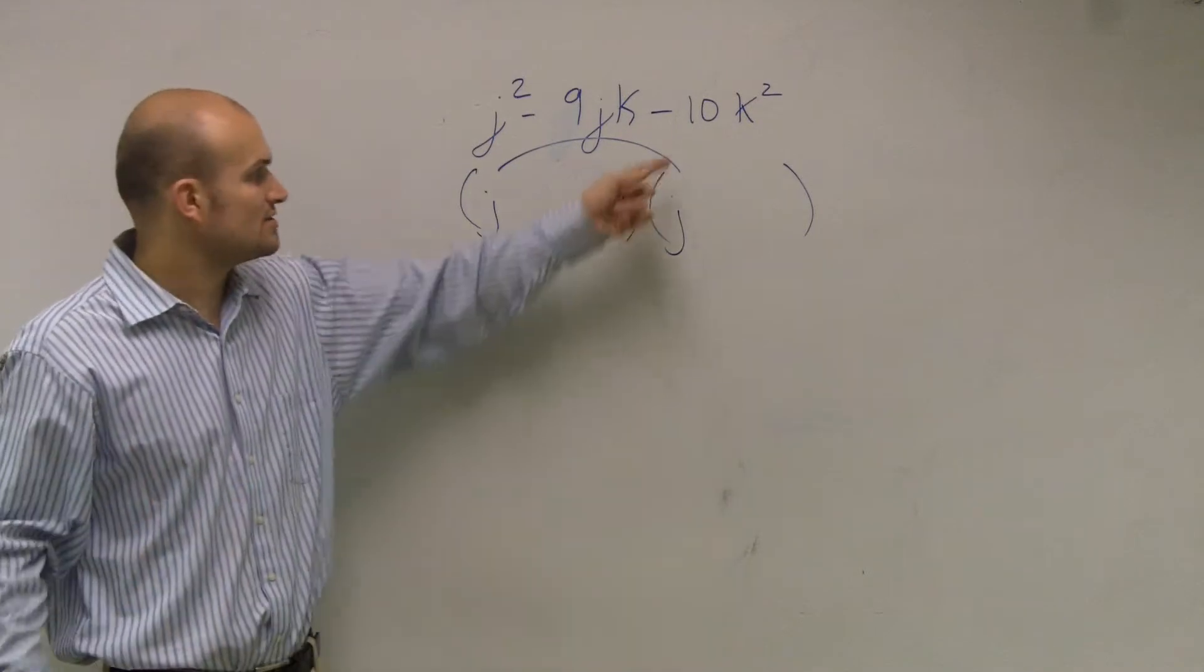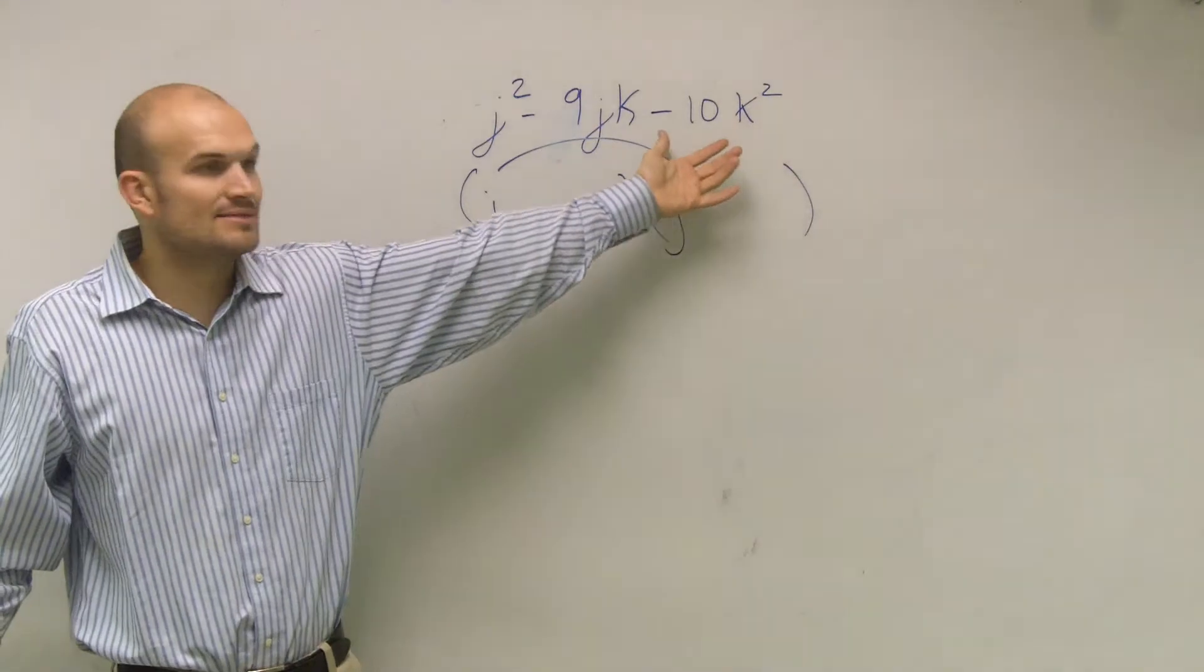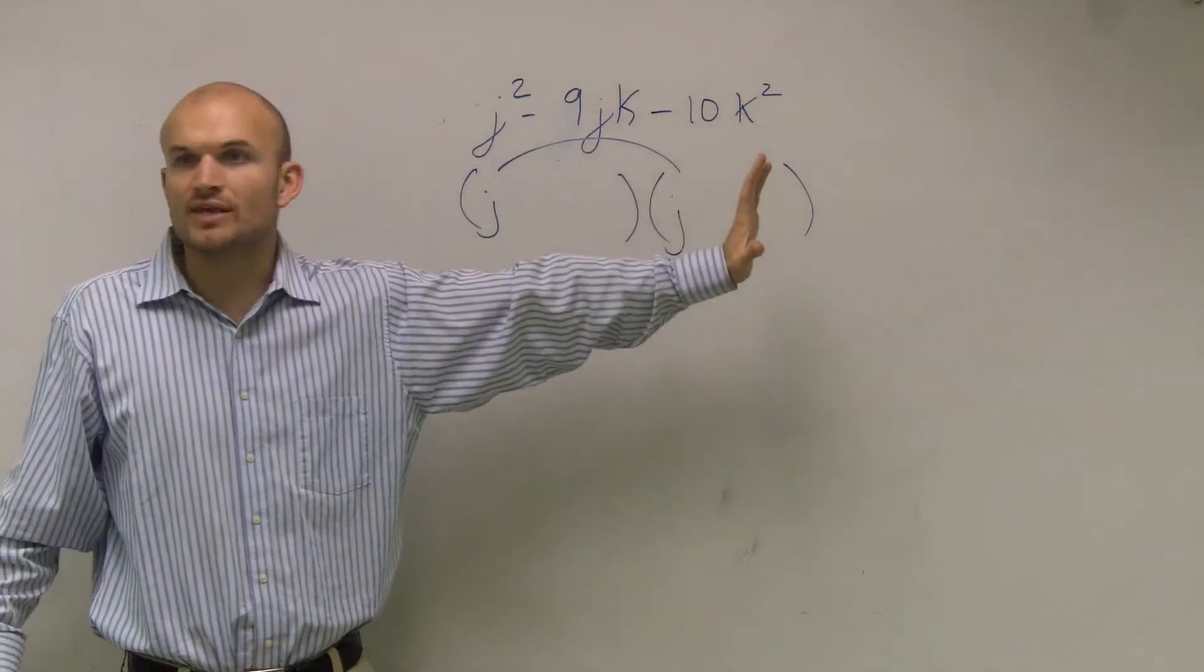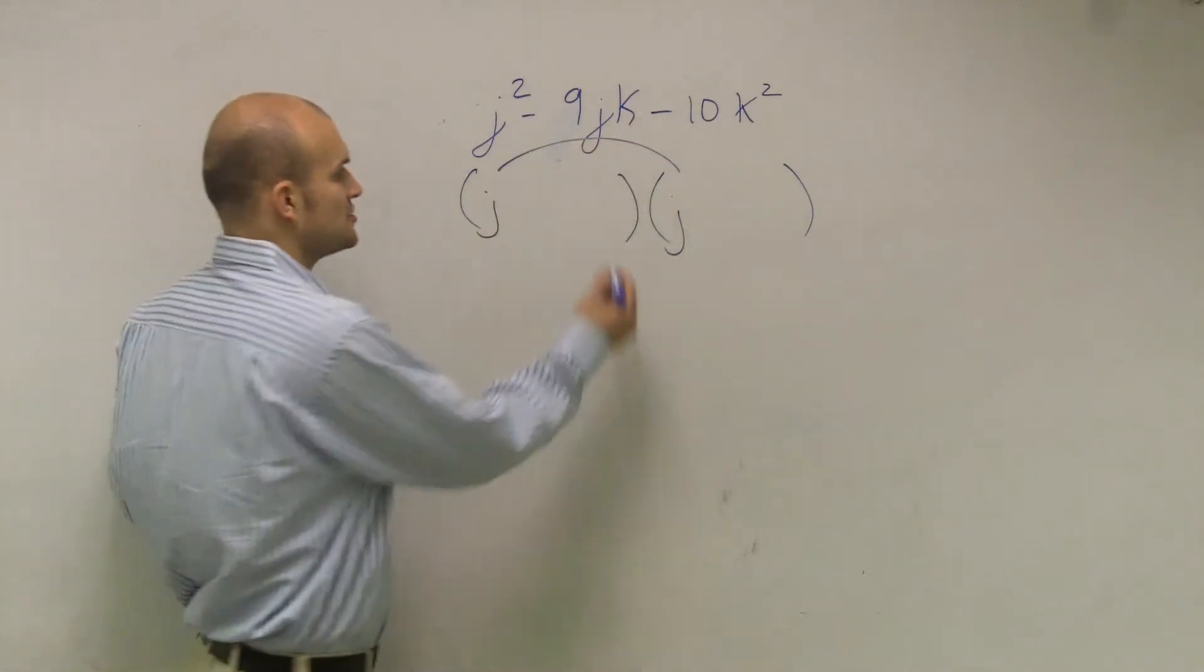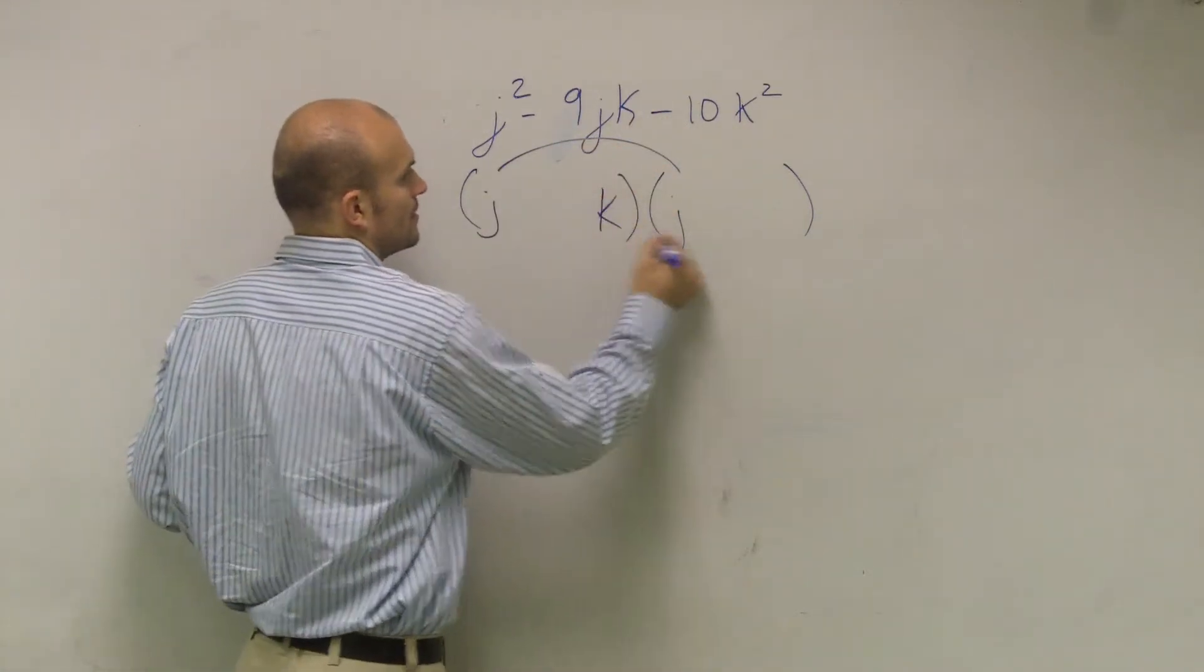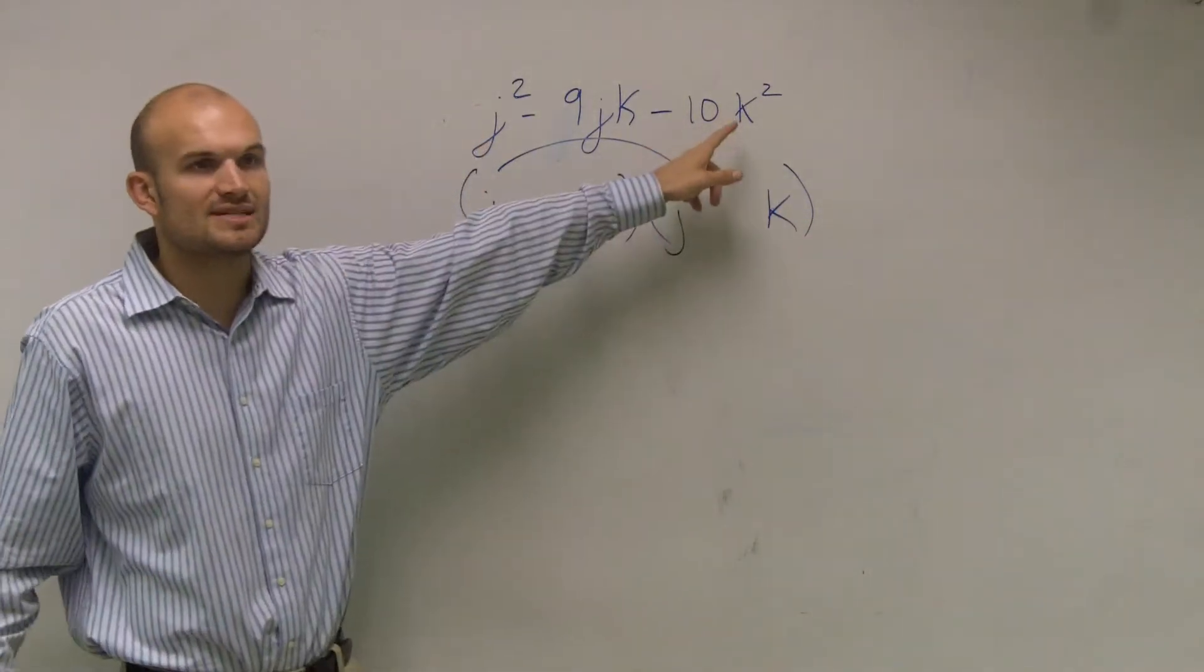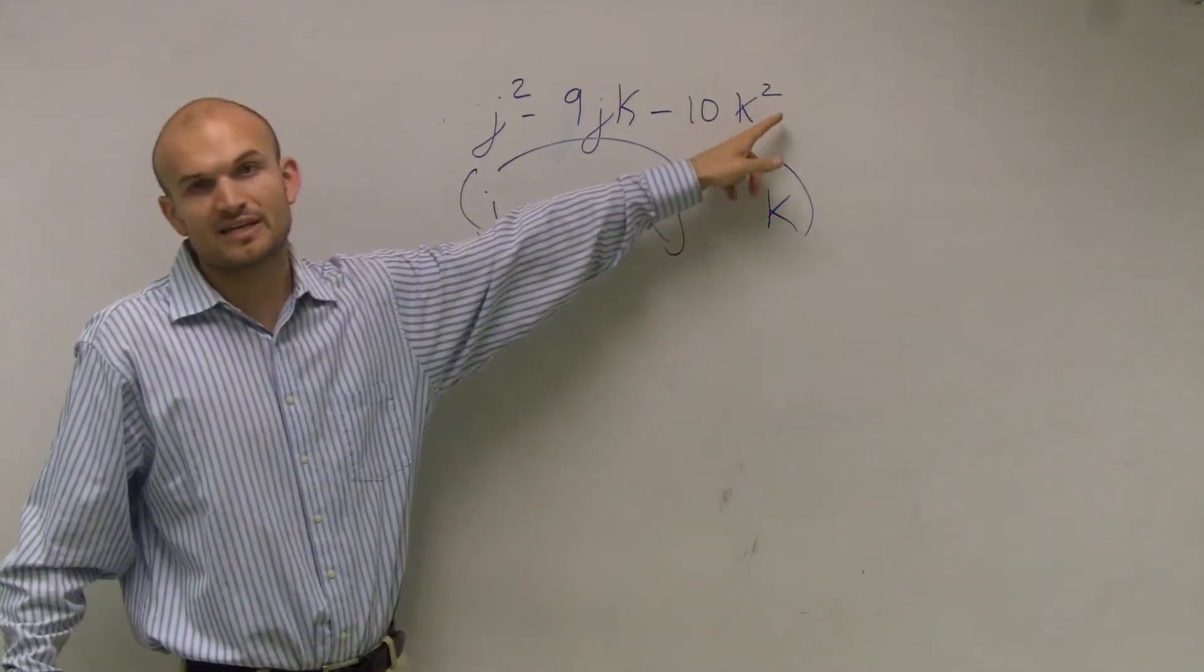Then what we tried to do is figure out what two numbers gave us our C term. Well, now our C term is more than just a number. It's a number and two variables. So to quickly do this, to really not worry about this anymore, just make sure that you put those at the end as well. Because no matter what my C term is, k times k is going to give me k squared.